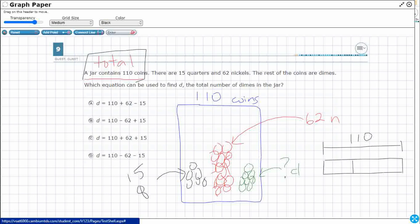I don't know how big the dimes are right now. So I've got 15 Q. I've got 62 nickels. And then I don't know how many dimes. Question mark. So what is an equation I can use to figure this out?